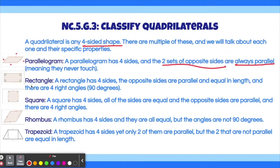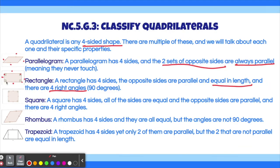The second type of quadrilateral is a rectangle. In a rectangle, the opposite sides are parallel, just like a parallelogram, but they are also equal in length, and there are four right angles. These two opposite sides are parallel and equal, and the same with the other two opposite sides. Additionally, there are four right angles — one, two, three, and four. This is what a rectangle looks like.